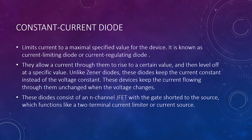Next is the constant current diode, also known as the current limiting diode or current regulating diode. They allow current through them to rise to a certain value and then level off at a specific value. Unlike Zener diodes, these diodes keep the current constant instead of the voltage constant. These devices keep the current flowing through them unchanged when the voltage changes. These diodes consist of an N-channel JFET with the gate shorted to the source, which functions like a two-terminal current limiter or current source.